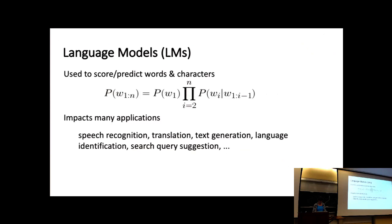I don't think I need to explain language models to this audience, but on the off chance we have some guests who aren't so familiar: a language model is used to characterize a word sequence — it could be a character sequence, basically any symbolic sequence. We can use a chain rule to represent the probability of a sequence in terms of the products of each word given its history. It has many applications: speech recognition, translation, text generation, language identification, search query suggestion, and various other things.